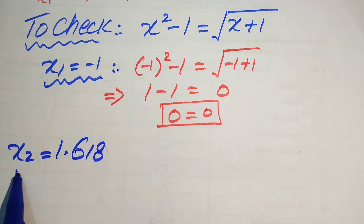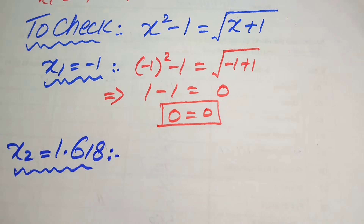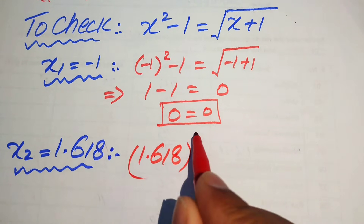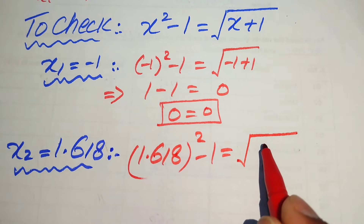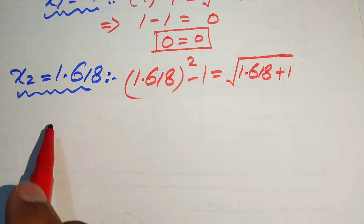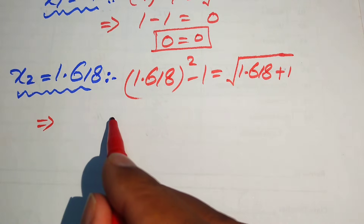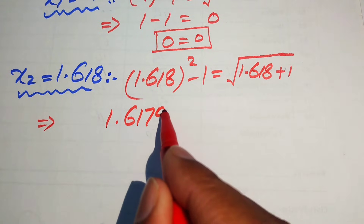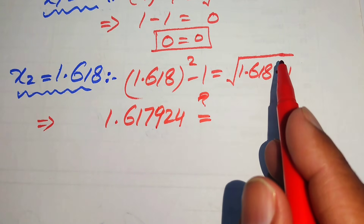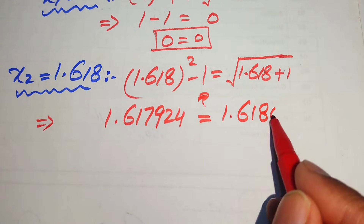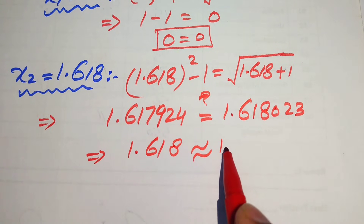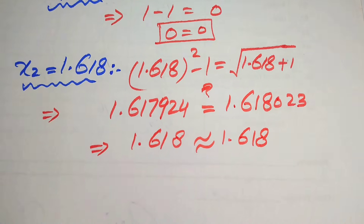We check the second root x2 equals 1.618. Substituting: 1.618 squared minus 1 equals the square root of 1.618 plus 1. Opening the square gives approximately 1.617924 on the left side, and taking the square root of 2.618 gives approximately 1.618023 on the right side. Both sides are approximately equal to 1.618, so the second root also satisfies the given equation.